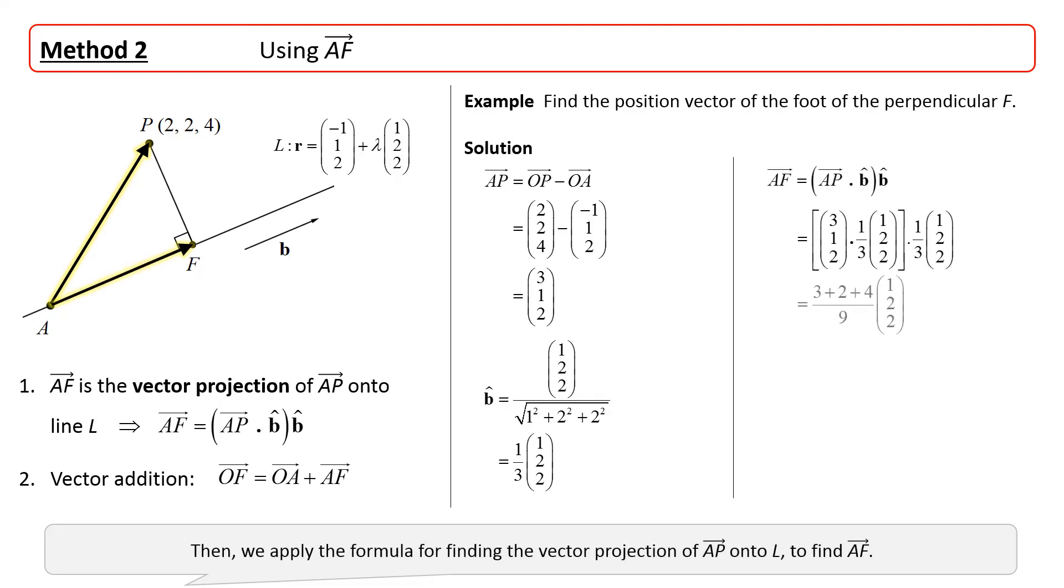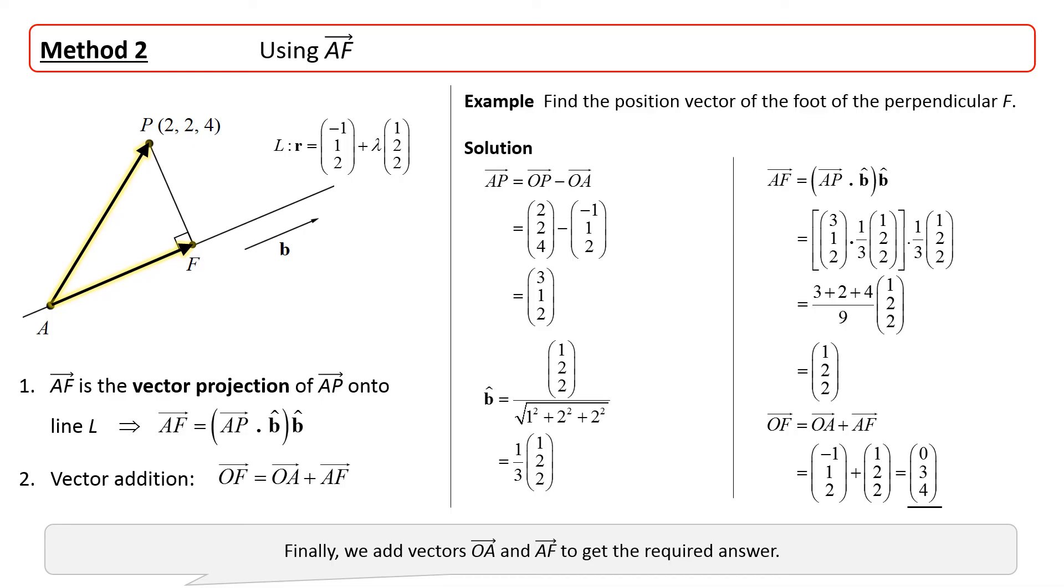Then, we apply the formula for finding the vector projection of AP onto L to find AF. Finally, we add vectors OA and AF to get the required answer.